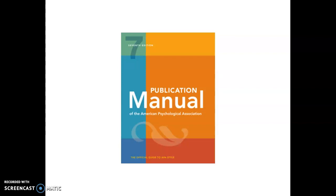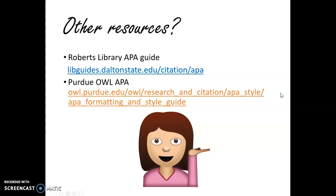If you're going to be a grad student in one of the fields that uses APA, you might want to buy a copy, but it's not necessary. The fields that use APA would be sciences including social sciences, business, education, and health sciences — there are a lot of fields that use APA. You can use the Roberts Library APA guide, or the Purdue OWL APA page, which I really like. It has extensive, up-to-date resources showing formatting and examples of in-text citation and reference entries, and also a sample paper showing how the paper should be formatted. I highly recommend it.